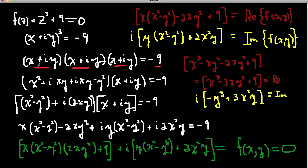Now I just brute-force this calculation. First I multiply the first two terms. I get x times x, which is x squared. I get x times iy, which is i times xy. I get iy times x, which is also i times xy. And then iy times iy: i times i is negative 1, so iy times iy is negative y squared. So squaring the first two factors gives me x squared plus 2ixy minus y squared.